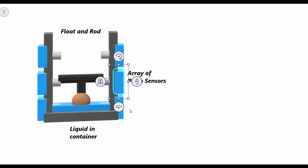Whenever a particular sensor is triggered, it gives us the instantaneous position of the liquid level. So this is all about liquid level measurement using a piezoelectric sensor. I hope you like this video — please subscribe to Engineering Tutorial for more videos related to engineering, science, and technology. Have a great day, thank you very much.